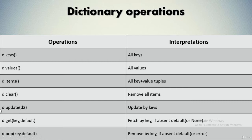If you have two dictionaries d and d2, the update operation replaces elements in d with elements from d2 based on common keys. The dot-get function takes a key and returns the associated value; if the key is not found, it returns a default. Using the pop keyword, you can delete a particular element associated with a key — if the key is not found, it returns a default.